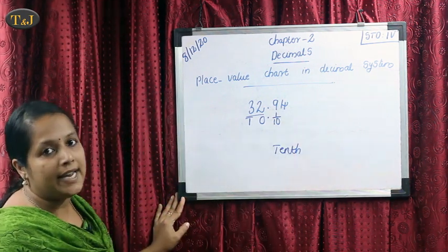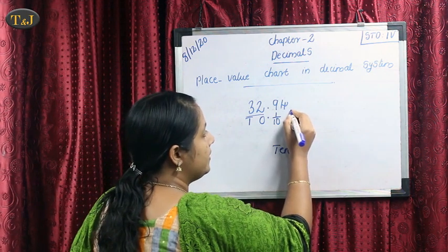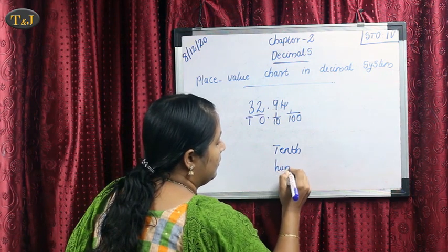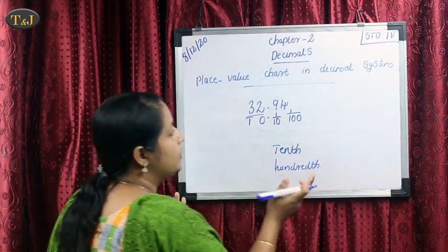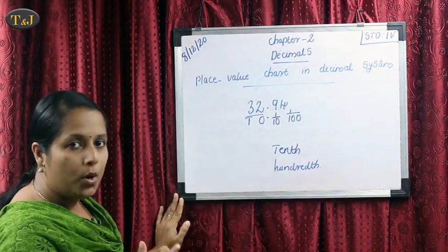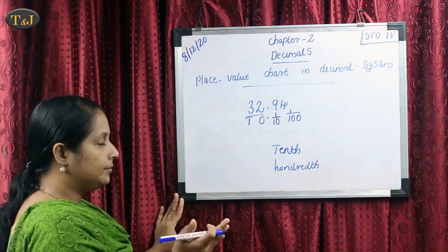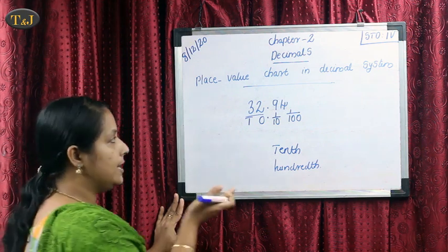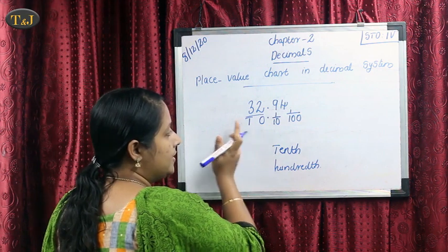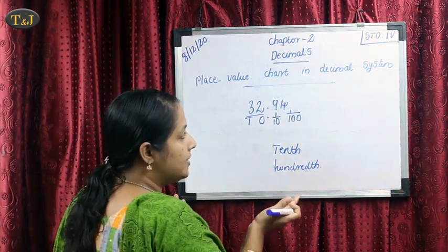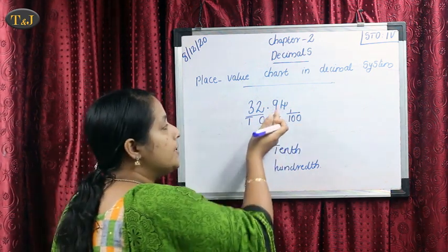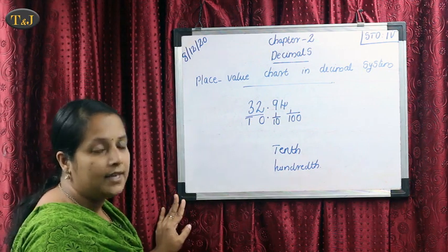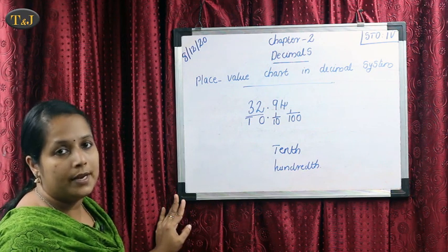So the place value of 9 is in the tenths place. After the tenths place, the next place value is 1 by 100, which is the hundredths place. After that, the third place is the thousandths place, which is 1 by 1000. So after the point: first place is 1 by 10, second place is 1 by 100, and third place is 1 by 1000.